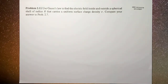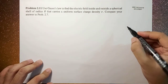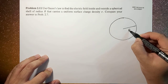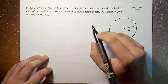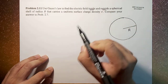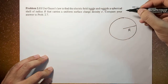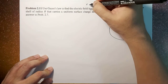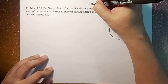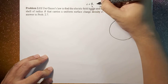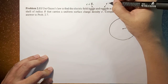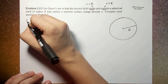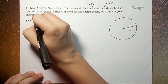Now here we have a spherical shell. So if this is your spherical shell of radius R, we're looking for the electric field inside and outside. For inside, the points from the center of the sphere would be r less than capital R. And then for outside, we're going to consider r greater than R. So let's start with r less than capital R.